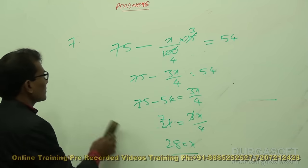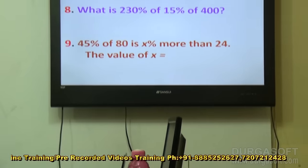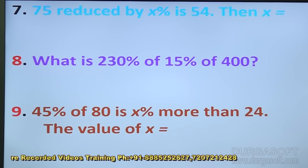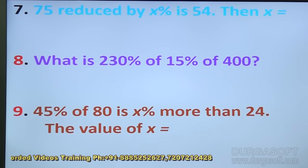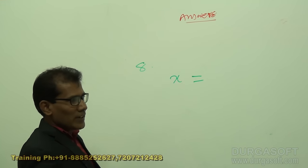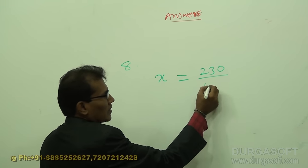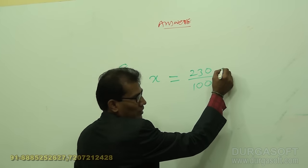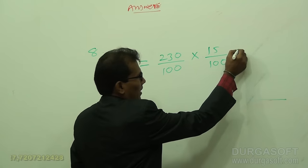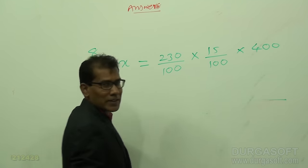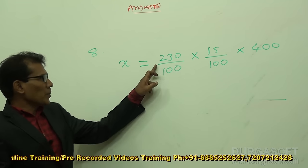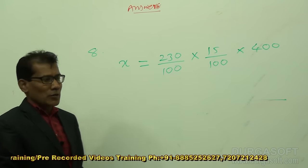Take question number 8. Use the keywords as we learned. The question is: what is 230 percent of 15 percent of 400? 'What' means x, 'is' means equals, and 'of' means multiply. So x equals 230% times 15% times 400.